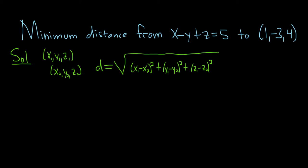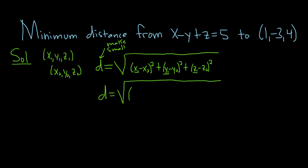In this problem, all we have to do is replace these points with what we have in the problem, and make this as small as possible. We can replace x1, y1, and z1 with x, y, z. So it'll be x minus 1 squared, plus y minus negative 3 — so y plus 3 — squared, plus z minus 4 squared.